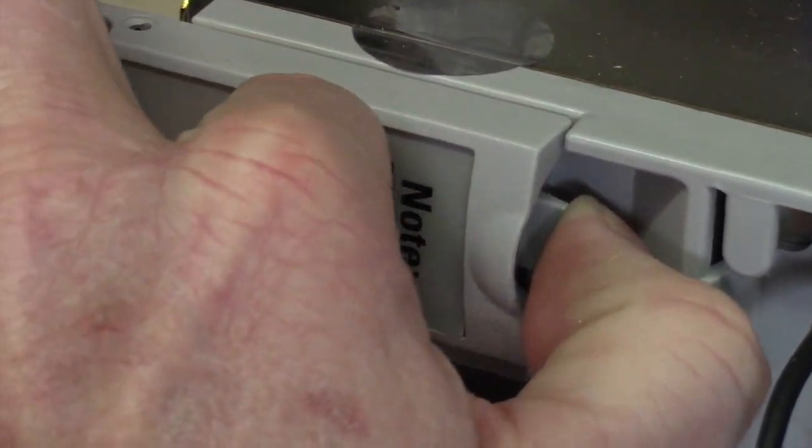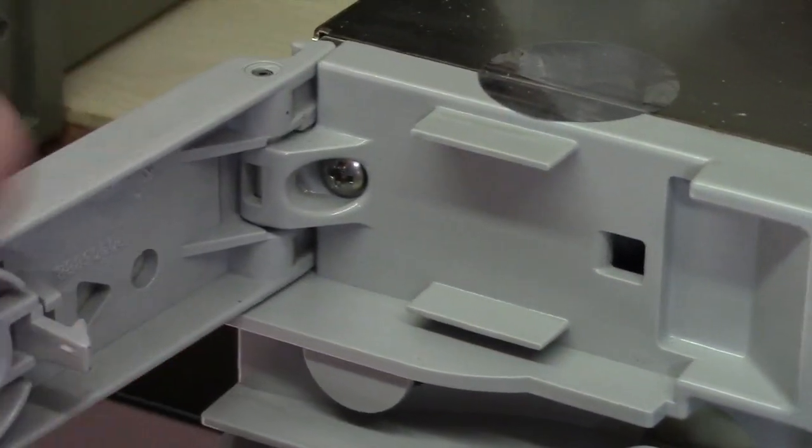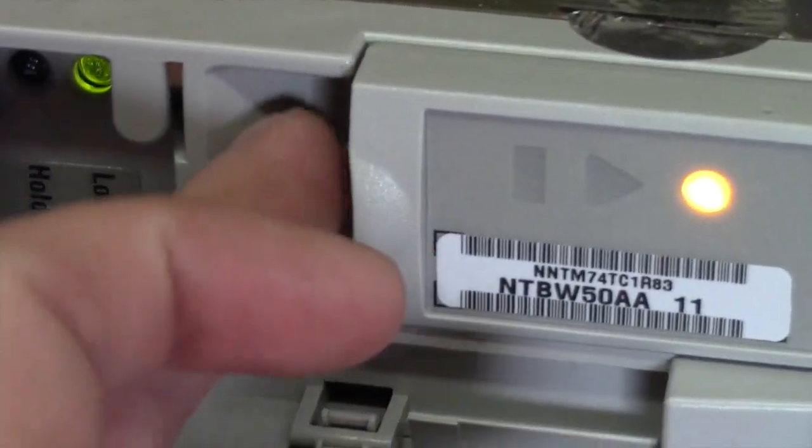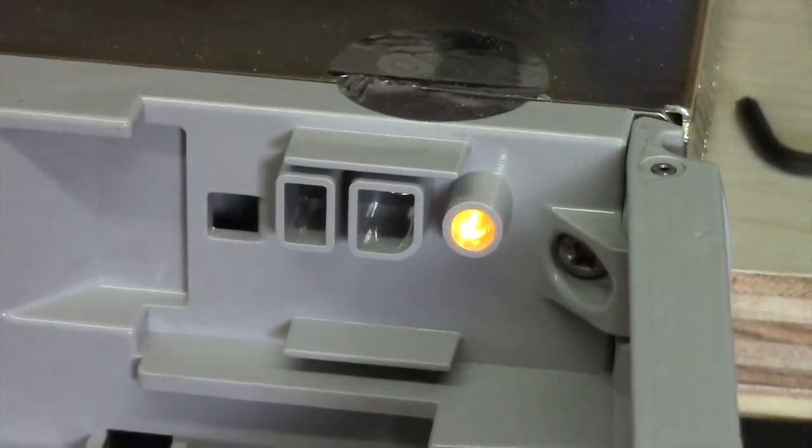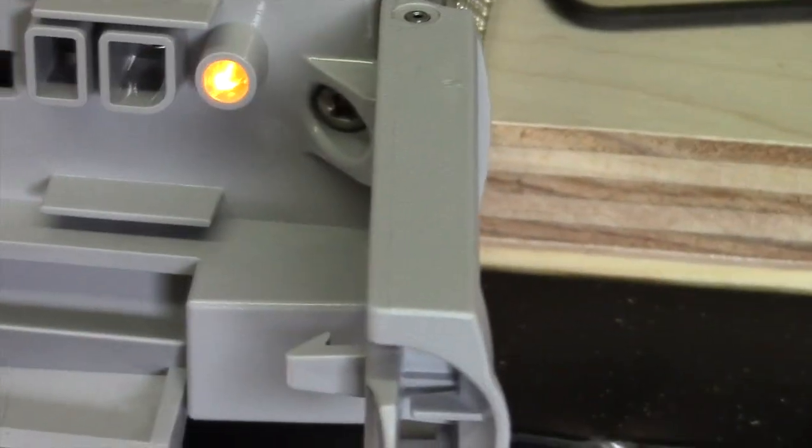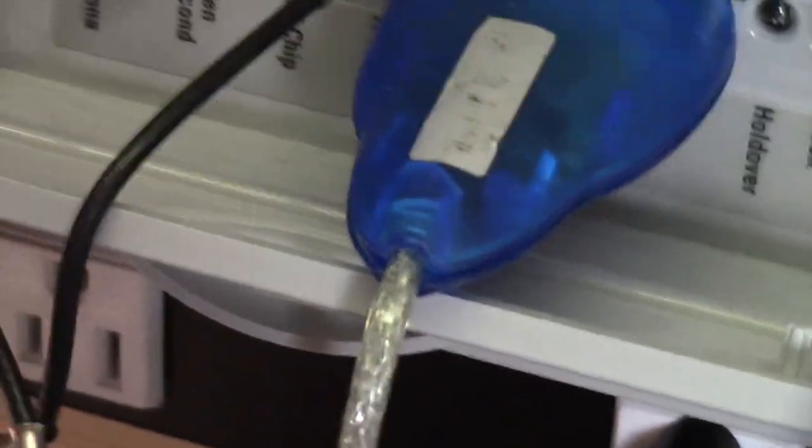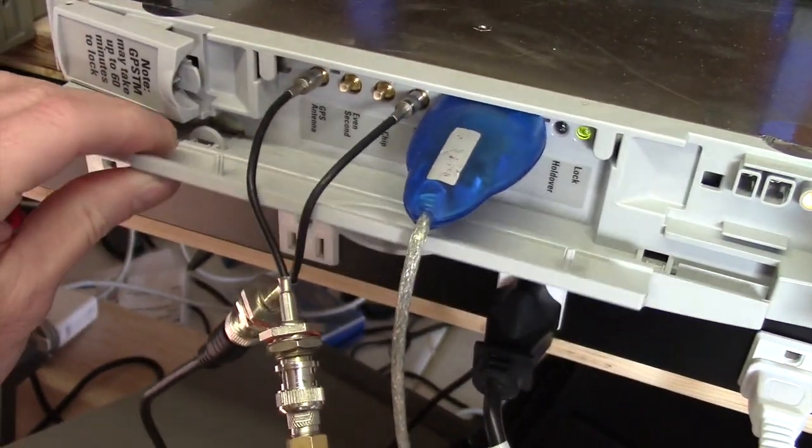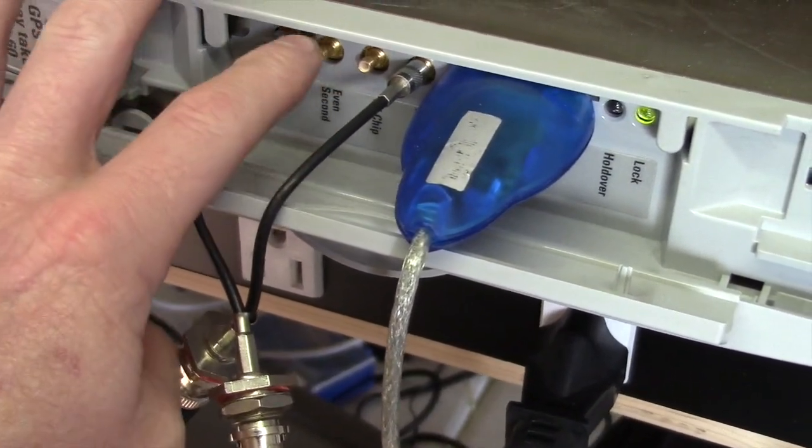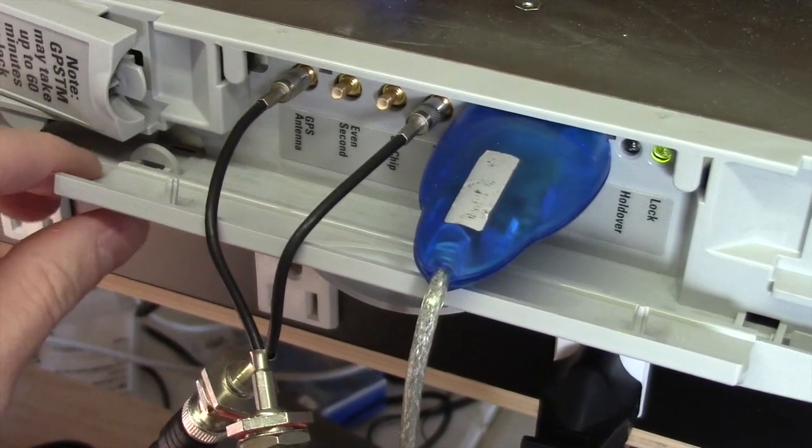Just to kind of give you an idea of how to disassemble one of these, these are card-based units. Basically you remove this screw behind this plate and there's also another screw here, and that basically holds the front plate on so that you can get to this and this will basically slide off without any issues.